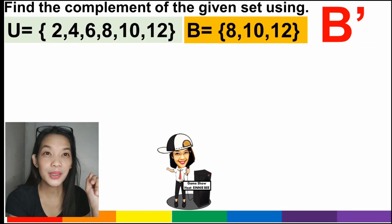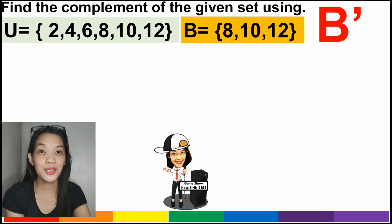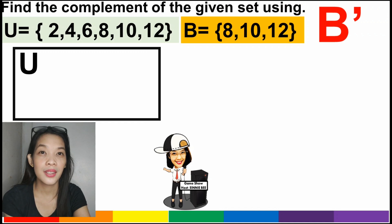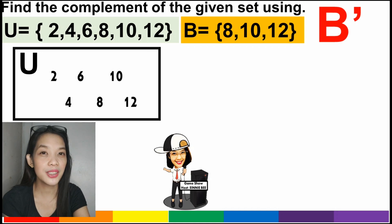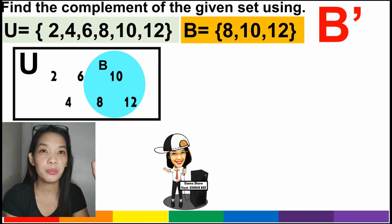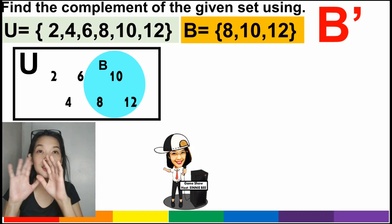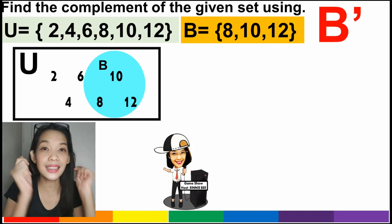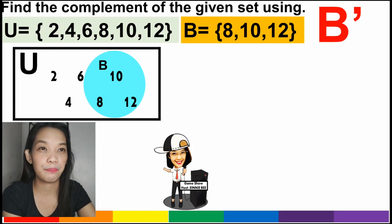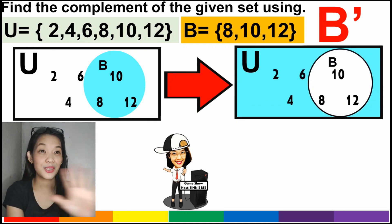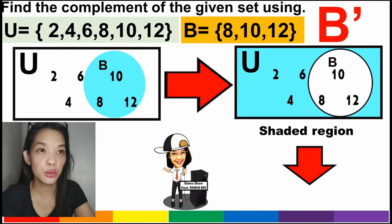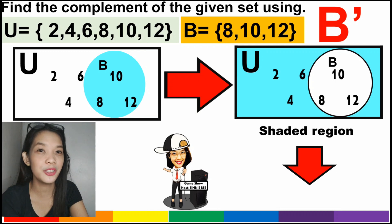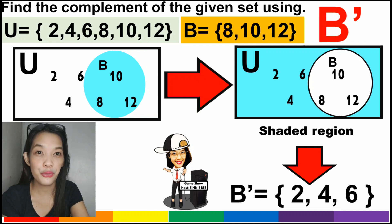To find the complement of B using the Venn diagram, we illustrate the universal set with elements 2, 4, 6, 8, 10, and 12. The elements of B are 8, 10, and 12. To get the complement of B, those are the elements found in the universal set but not in B. The shaded region is the complement of B, and those elements are 2, 4, and 6.